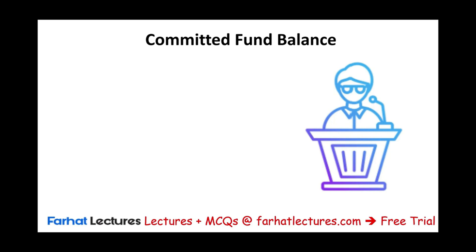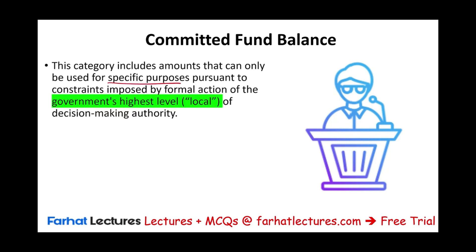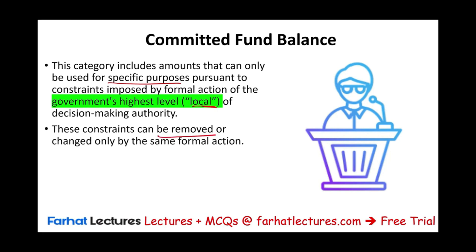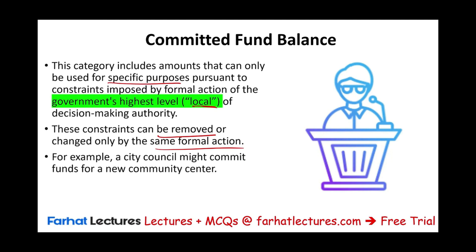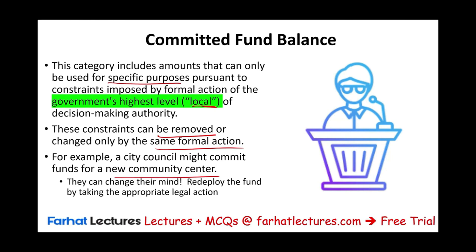Committed fund balance includes amounts that can be used for specific purposes imposed by formal action of the government's highest level authority — the local government, such as the city council. Because of that, those commitments can be removed or changed by the same formal action. If the city council voted to commit the funds, they can vote again and remove it. For example, they committed money for a new community center — they can change their mind and redeploy the funds elsewhere. Simply put, these are obligations set by the highest local government, but there is no external force or enabling legislation restricting them.